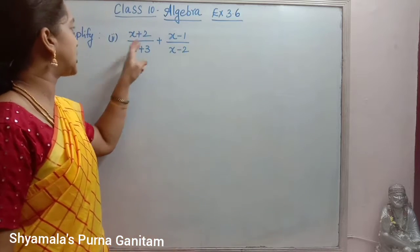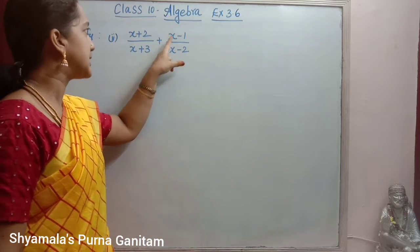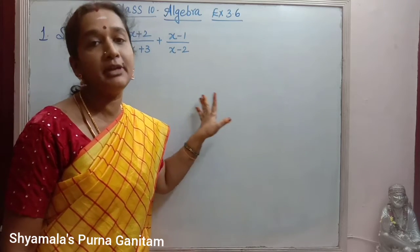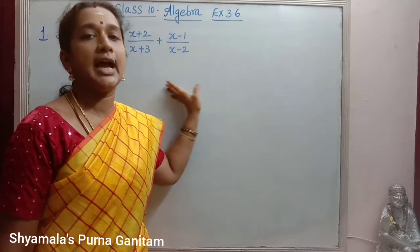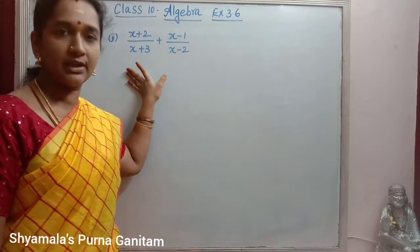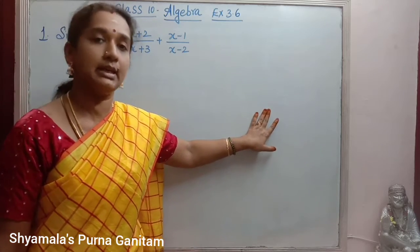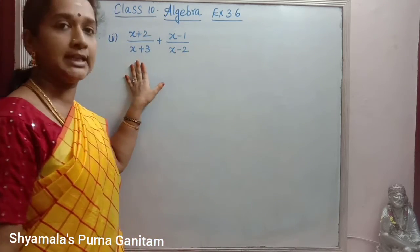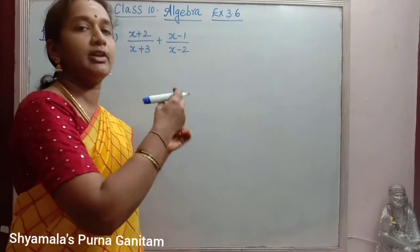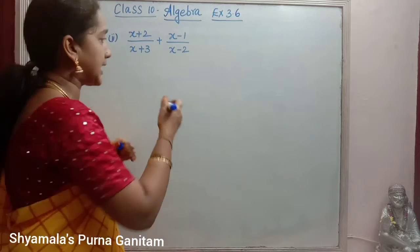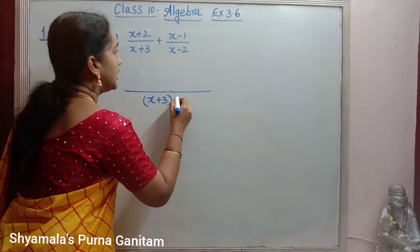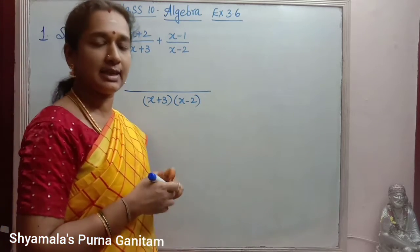The second sum is (x+2)/(x+3) plus (x-1)/(x-2). In the previous sum we had the same denominator, so we added numerators directly. But here we have two different denominators, so as I mentioned, we have to take the LCM. The LCM of x plus 3 and x minus 2 is (x+3)(x-2).